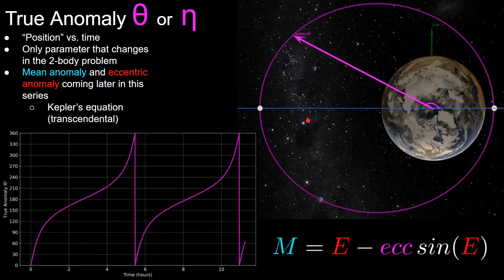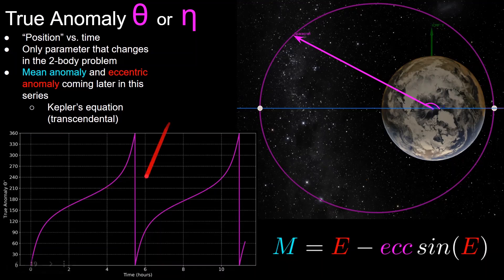The last orbital element is true anomaly, which describes the position of the spacecraft along its orbit and is the only element that changes with respect to time in the two-body problem. True anomaly is defined as the angle between periapsis and the spacecraft's current position. At time equals zero, the spacecraft is at periapsis since true anomaly equals zero. True anomaly then increases rapidly at first but slows down as the spacecraft approaches apoapsis, due to the inverse relationship between position and velocity magnitude. It hits 180 degrees at apoapsis, then speeds up again as the spacecraft returns to periapsis.